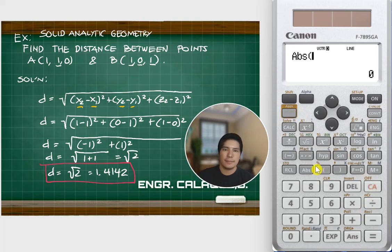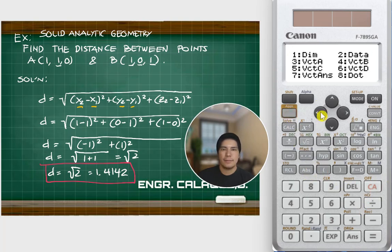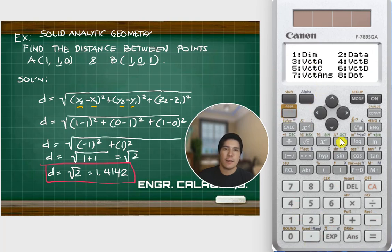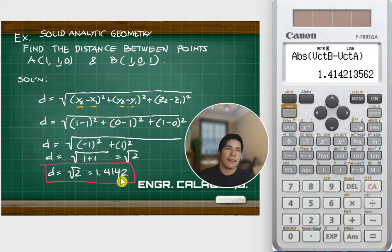Press Apps, then retrieve vector B (which is x₂, y₂, z₂) minus vector A, then take the absolute value — CV — and we get 1.4142.